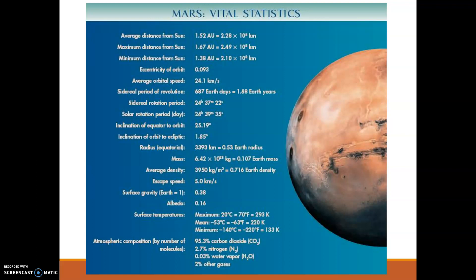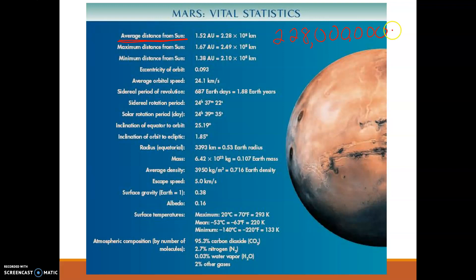I'm going to point out some important details here. Our average distance from the Sun to Mars is a big, large number. This is our distance from the Sun to Mars in kilometers. Another important thing to point out is our revolution compared to Earth.